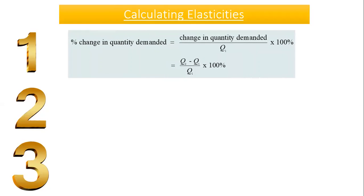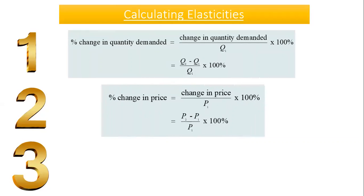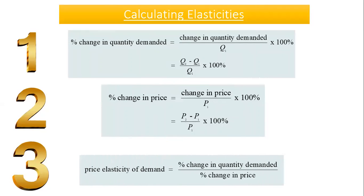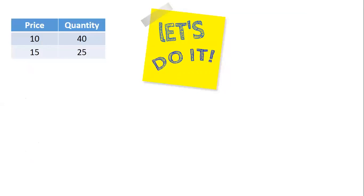Step one: calculate the percentage change in quantity demanded — that's Q2 minus Q1 divided by Q1 (the initial), times 100. Step two: calculate the percentage change in price — P2 minus P1 divided by P1 (the initial). Step three: combine them — percentage change in quantity demanded divided by percentage change in price. For practice, consider price increasing from 10 to 15 and quantity decreasing from 40 to 25. Feel free to pause and calculate to test your knowledge.